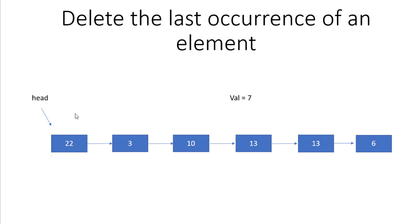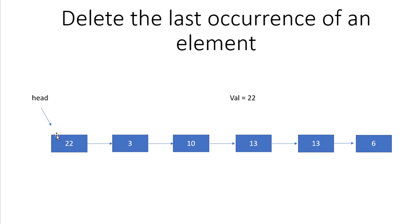The second case is when the value to be deleted is the first node and it is also the last occurrence. For example, if the value is 22, which is the head node, we check if temp equals head. If so, we simply return head.next as the new linked list.